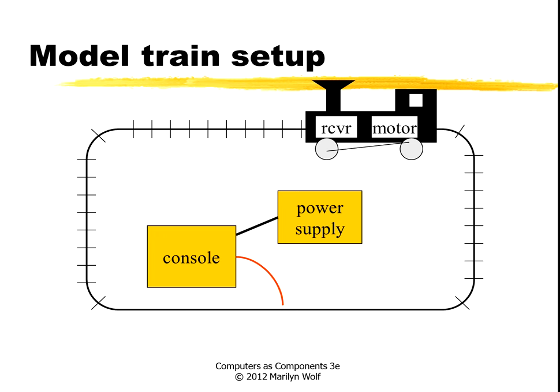We want to design a model train that's remotely controlled. We have a train on a track. That train has a receiver on it that listens for signals from the track — we use the track as the communications medium. The receiver controls the motor, and we can also use it to control lights, whistles, and things like that. We have a console that we use to send messages to the train over the tracks. That console also connects to the power supply, because the track is used to supply power to the train as well. We want to look at the design of both the console and of the train itself.